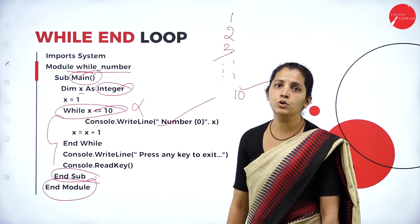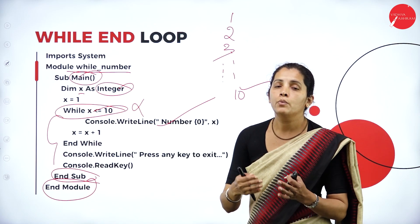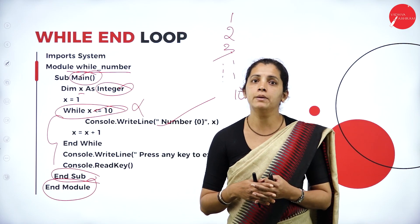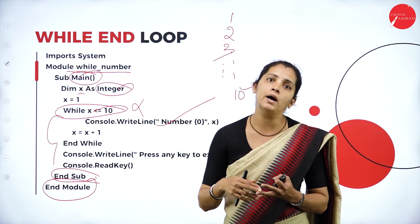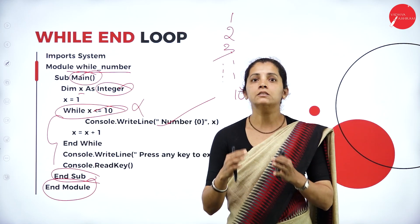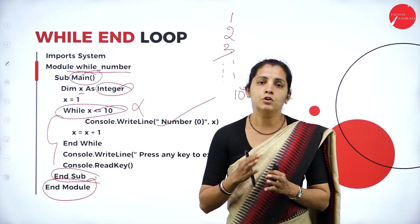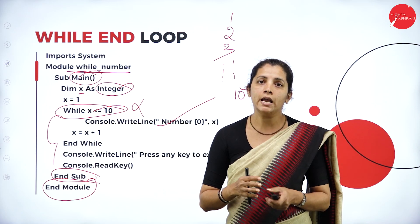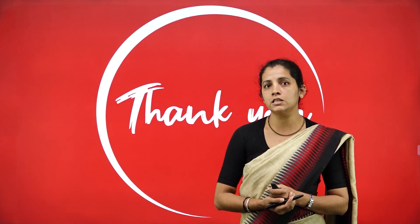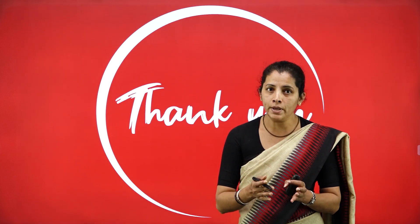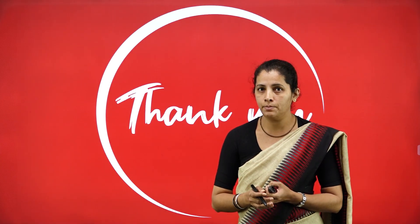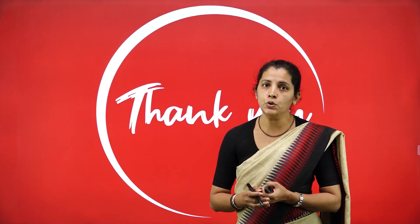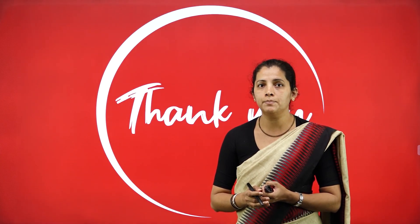This is the way I can use looping statements in VB.NET. The most commonly used looping statements in VB.NET are while, do while, and for. The syntax is entirely different from C#.NET, Java, or C. In today's session I covered what is looping and the different types of looping statements. Let's meet in the next session with a new concept. Until then, keep watching and keep learning. Thank you.